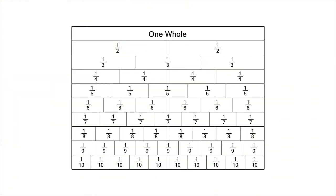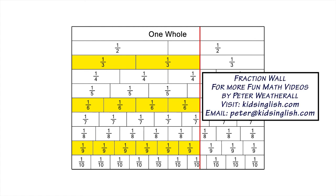Let's summarise what we've found. 2 thirds, 4 sixths, and 6 ninths are equivalent fractions. One way to check for equivalent fractions is to see which fractions line up with 2 thirds when you draw a vertical line from the end of 2 thirds down the fraction wall. The ends of 4 sixths and 6 ninths line up nicely with 2 thirds.